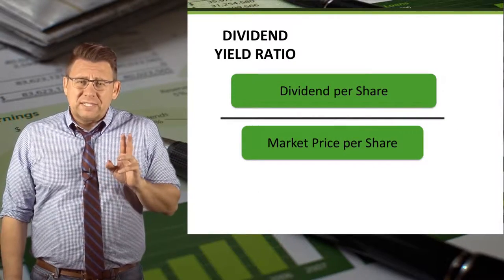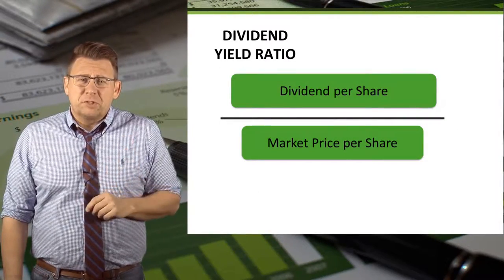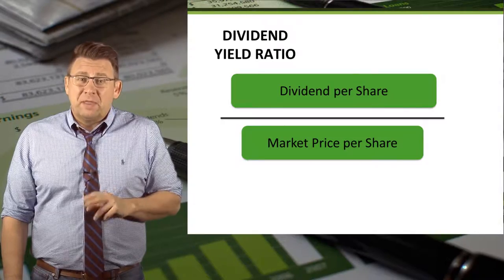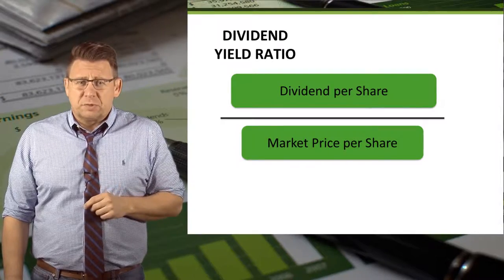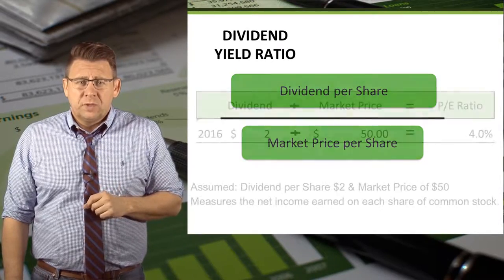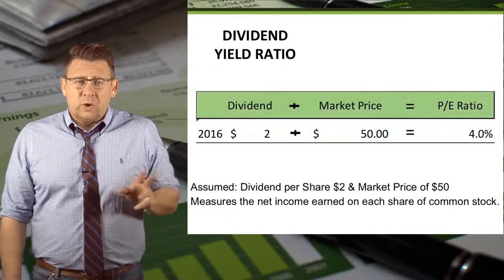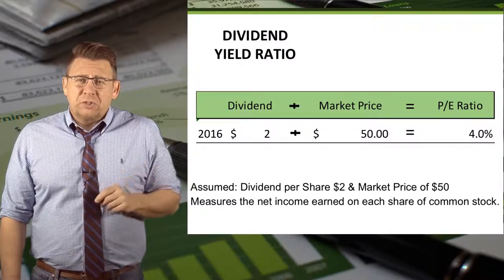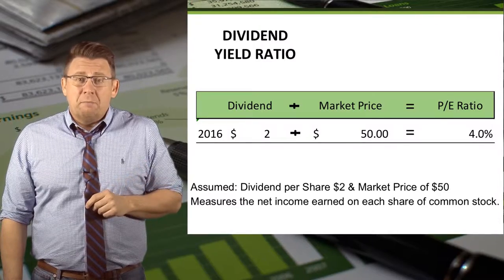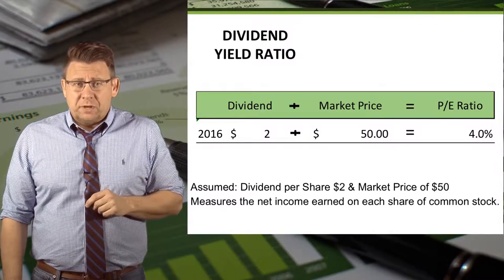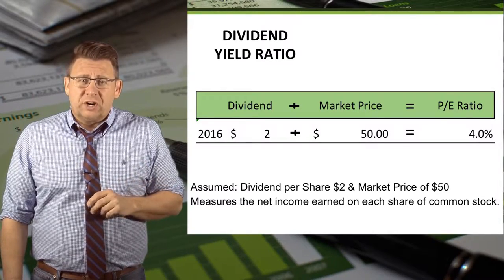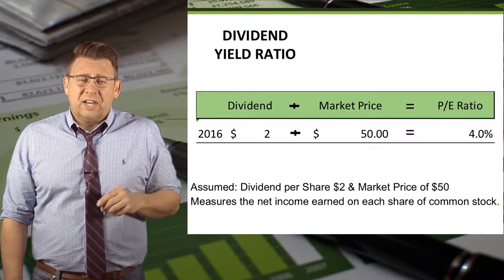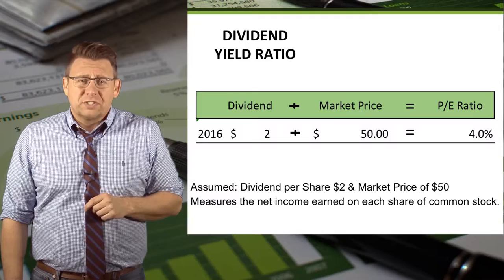The formula is dividends per share divided by the market price per share. For 2016, dividends per share divided by market price per share gives us a dividend yield of 4%.